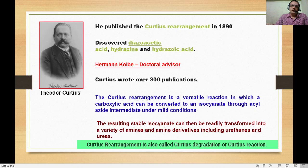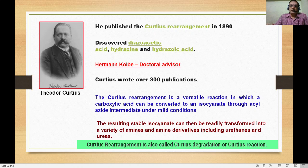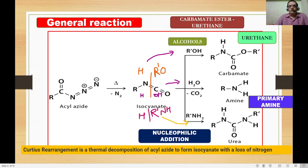The Curtius rearrangement is a versatile organic reaction in which carboxylic acid can be converted into isocyanate through an azide intermediate under mild conditions, resulting in a stable isocyanate that can be transformed into various products like amines, urethanes, and ureas.